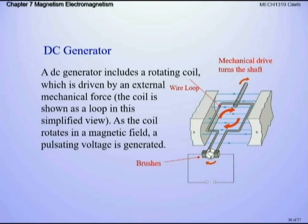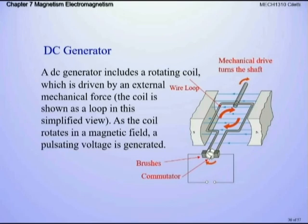A DC generator and motor have the same build — the concept is just reversed. In a generator, we go mechanical to electrical. The commutator is the white circle in the middle that the brushes touch; as the rotor rotates, the commutator rotates with it and the brushes rub against it — that's how we get current flow. The current goes out to an external circuit, like charging a battery. A good example is a hand-crank weather radio.